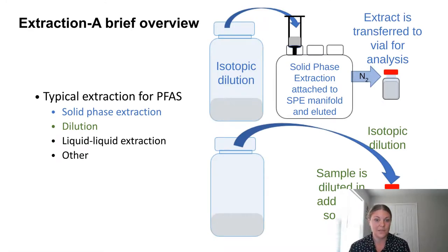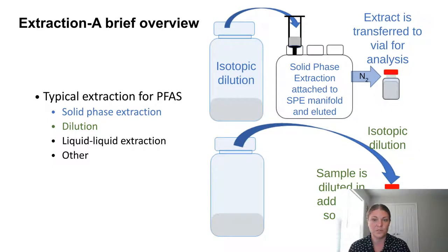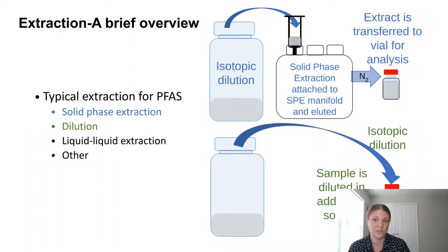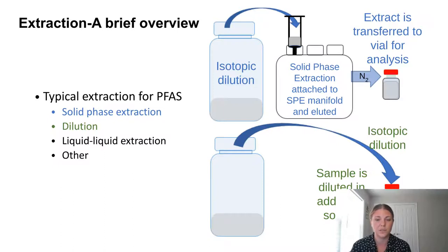Now we have our material; the first thing we need to do is extract it. A typical extraction could consist of solid phase extraction — you would add isotope dilution in the first step, attach to an SPE manifold, elute it, blow it down to concentrate the PFAS, and transfer to an autosampler vial. Alternatively, you could do a dilution series — take a small aliquot, add internal standards, and put it directly in your autosampler vial. Depending on the concentration, it has to be fit for purpose.